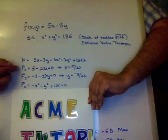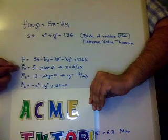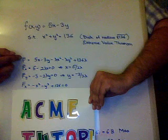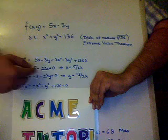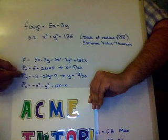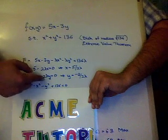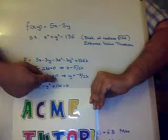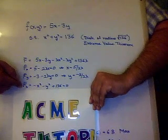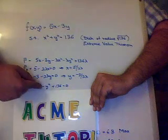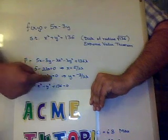And here we have f bar of x, which is the gradient with respect to x. So we get 5 minus 2 lambda x equals 0. Here we have the gradient with respect to y. We get minus 3 minus 2 lambda y equal to 0. And here we have the gradient with respect to lambda. We get minus x squared minus y squared plus 136 is equal to 0.